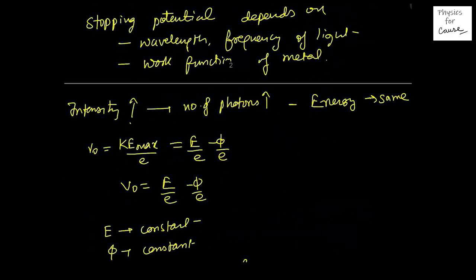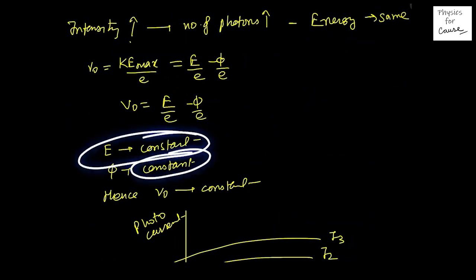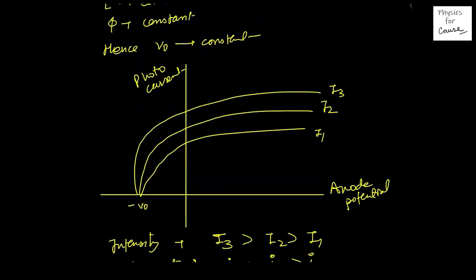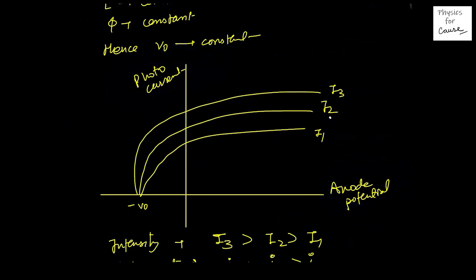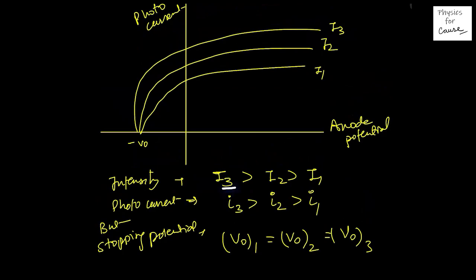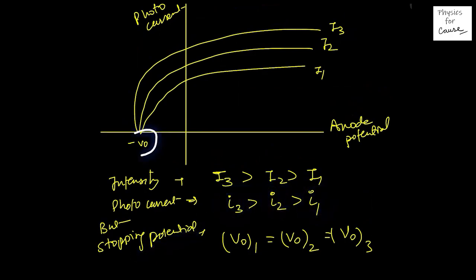On increasing intensity, the number of photons increases but energy remains the same, because the work function φ is constant. If we plot photocurrent on the y-axis and anode potential on the x-axis for three intensities i₃ > i₂ > i₁, the saturation photocurrent increases as i₃ > i₂ > i₁. However, the stopping potential V₀ remains the same for all three cases, because stopping potential depends on frequency and work function, not intensity.